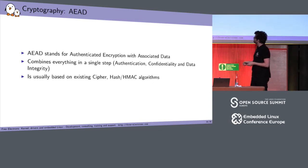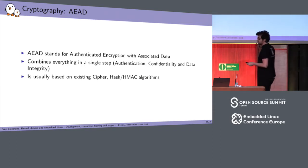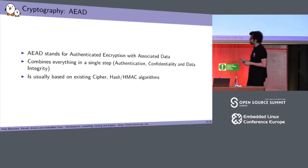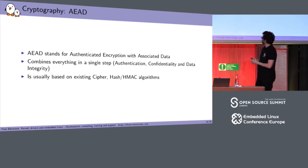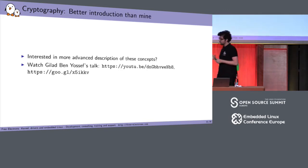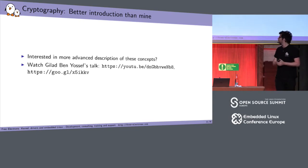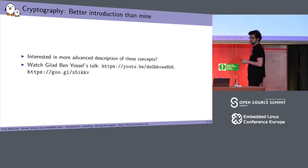Then we have the advanced block used in cryptography which does all of the things we've seen so far in a single step — taking data and ensuring data integrity, confidentiality, and authentication together. Most of the time these advanced algorithms are based on simpler building blocks like HMAC, CBC, and so on. That was a short introduction to crypto concepts. If you want to know more, you should watch the talk from Gilad Ben-Yosef, who is giving a talk this week.